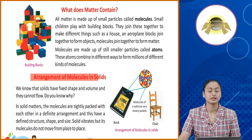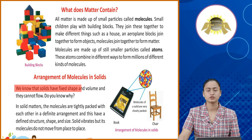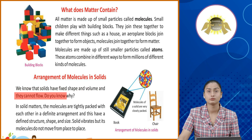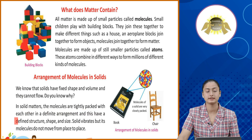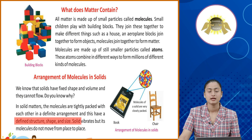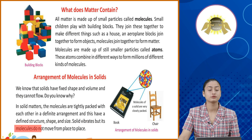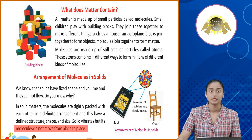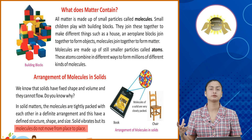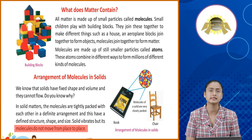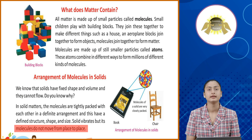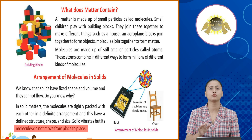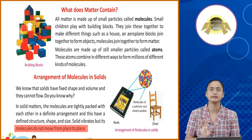Arrangement of molecules in solids. We know that solids have fixed shape and volume and they cannot flow. In solid matters, the molecules are tightly packed with each other in a definite arrangement and this gives them a defined structure, shape and size. Solid vibrates but its molecules do not move from place to place. Toh solid matter ek place to another asaani se flow nahi karte — uska reason ye hai ki iske molecules tightly packed hote hai. Ye vibrate zaroor karte hai lekin flow nahi karte.